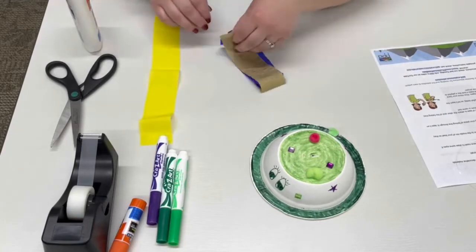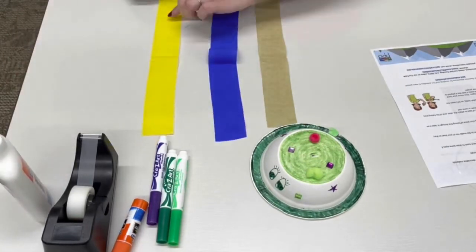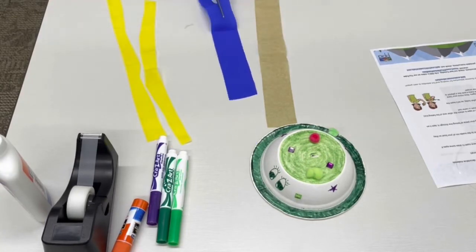Now you will want to cut your streamers in half the long way so that you have some jellyfish tentacles.